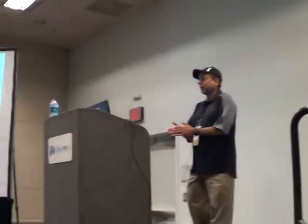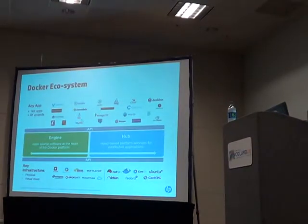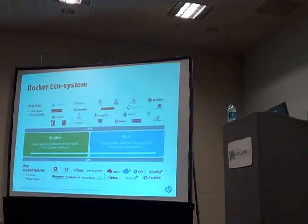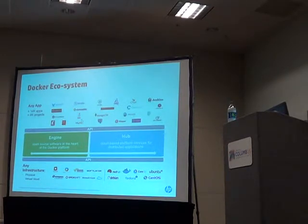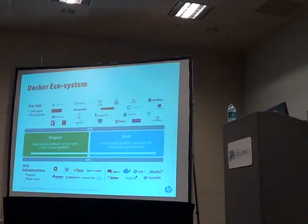What does the Docker ecosystem look like? At the bottom you have all the places where Docker can run: physical machines, virtual machines, and clouds, with various cloud providers supporting Docker. There are also various Linux distributions which have Docker built into them. On the application side, there are many utilities and tools — some embeddable inside Docker containers and some used to manipulate Docker containers. Configuration management tools like Chef, Puppet, and Ansible are integrated into the Docker ecosystem.